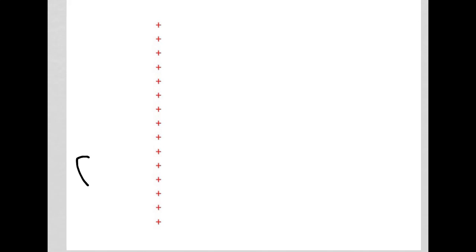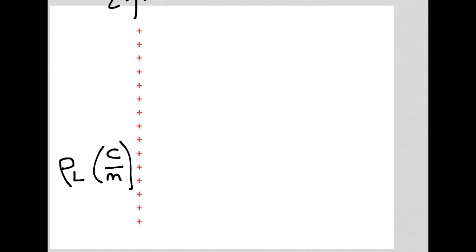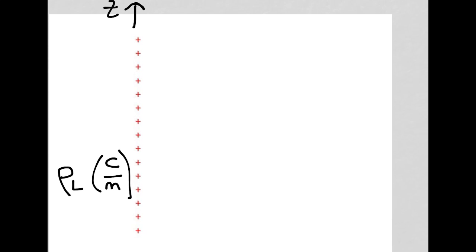Here I have an infinite line of charge. Let rho sub L represent the charge density, and that will be in coulombs per meter. Let's place this line of charge along the z-axis. What we want to do is find the electric field intensity due to this infinite line of charge, at some arbitrary point P.